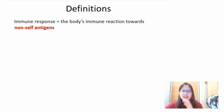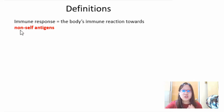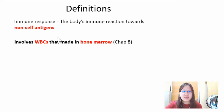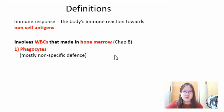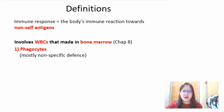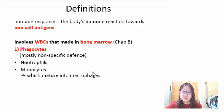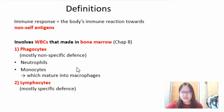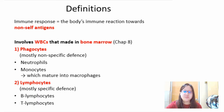The immune response is the body's immune reaction — the processes that target non-self antigens. This involves white blood cells made in the bone marrow. There are two major types: phagocytes, which are mostly non-specific, including neutrophils and monocytes that mature into macrophages; and lymphocytes, including B lymphocytes and T lymphocytes, which are mostly involved in specific defense.